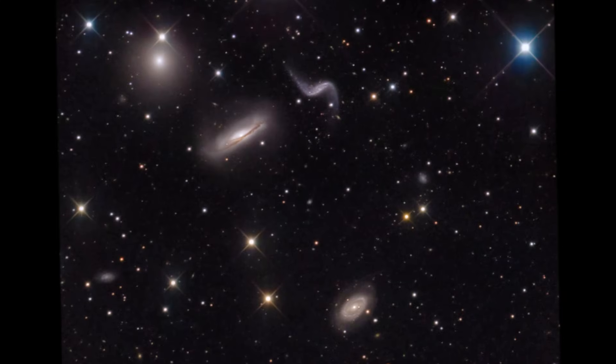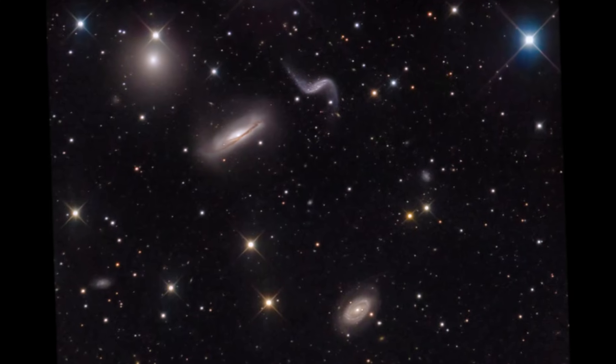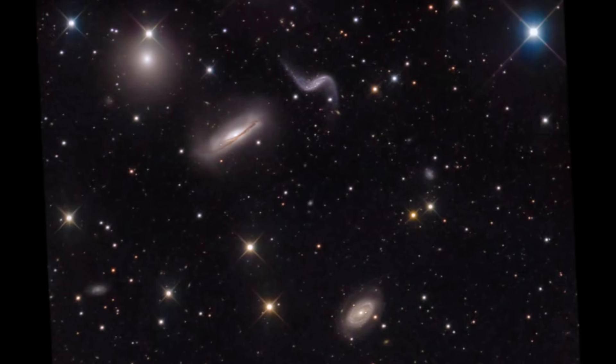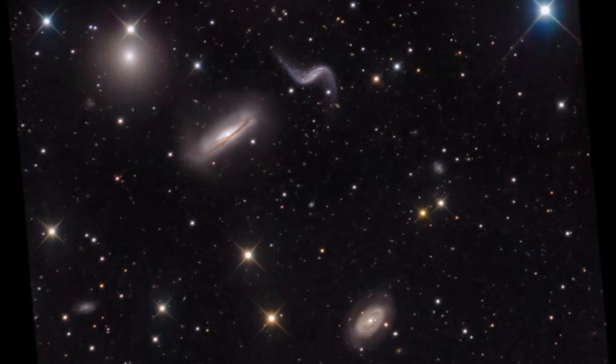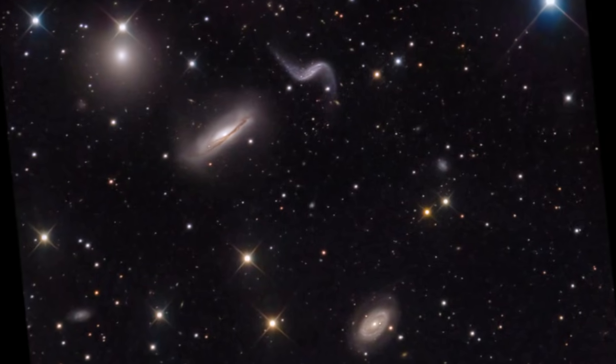Outside of the Local Group, scientists estimate that at least 170 billion galaxies exist in the part of the universe that can be seen from Earth, and there is no way to know how many more there are beyond that.